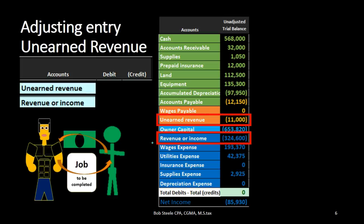So now let's talk about what unearned revenue is and why we are doing this. We can see that unearned revenue is in the liability section and it has a credit balance. It represents the fact that we have received money before we did any work. That might happen in the case of a security deposit — if we're doing a job and we need to buy materials, we might get money before we do the work.